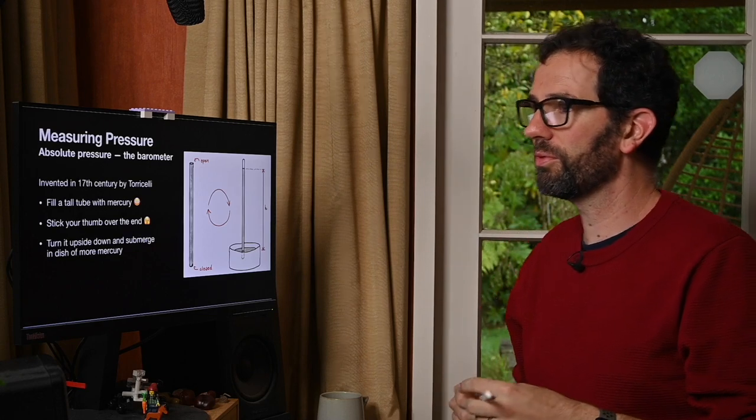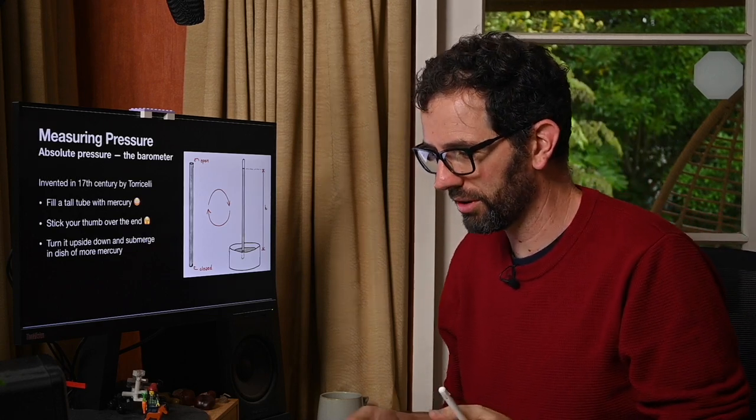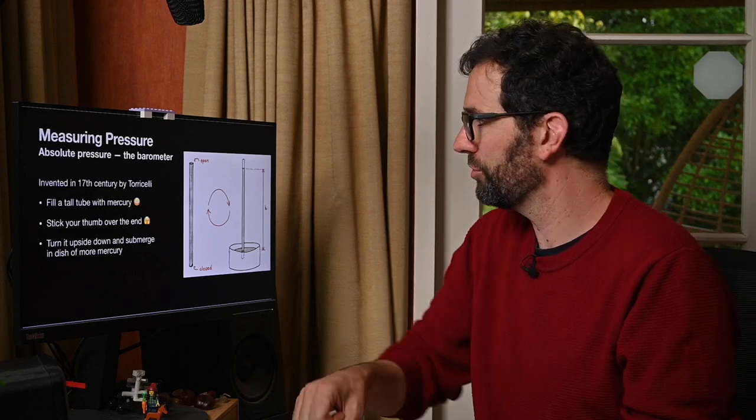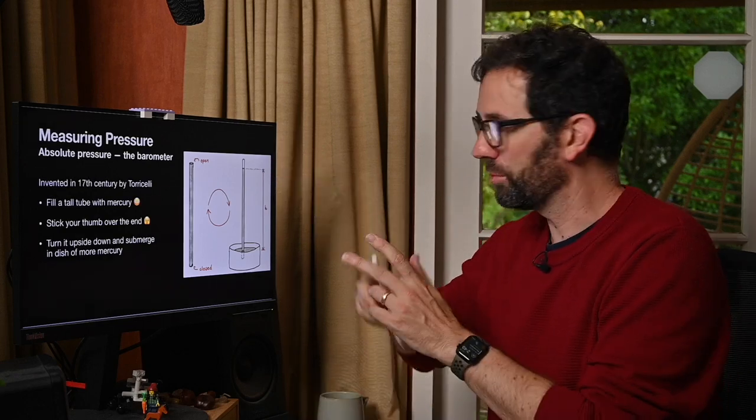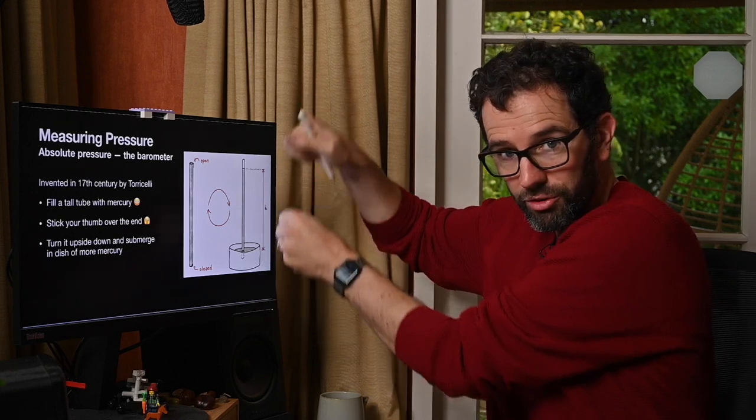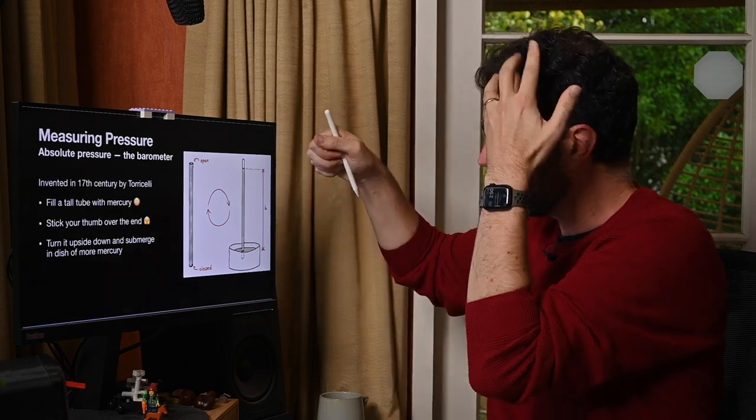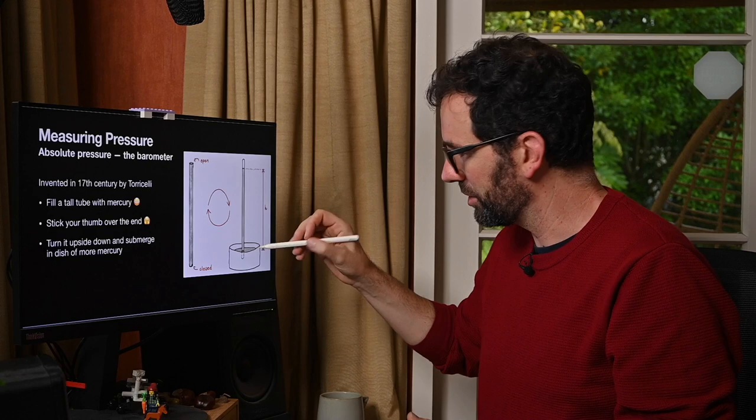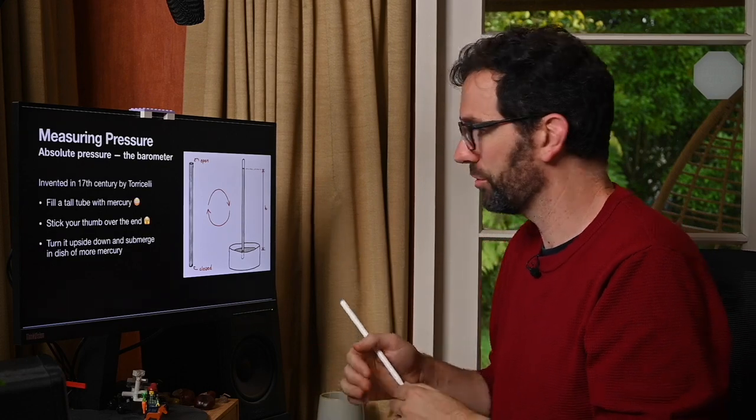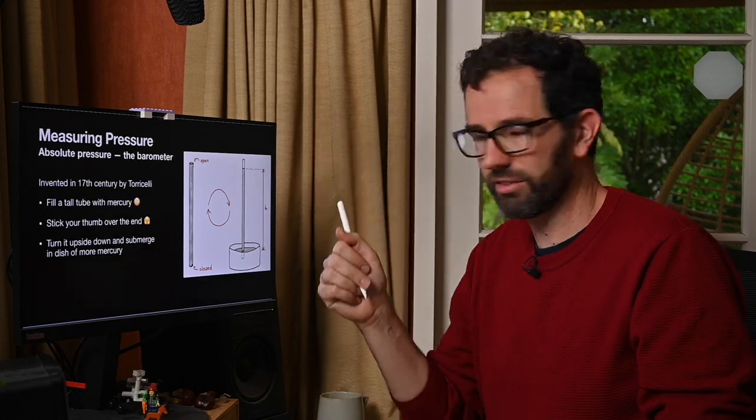Now you might have had this thing before where you have a glass of water and you tip it upside down, put it on a table. You basically end up forming a vacuum in the top here as this weight of mercury pulls down, and the pressure of the atmosphere that bears down on the rest of it stops it from all just rushing out unless some air can get in somehow.